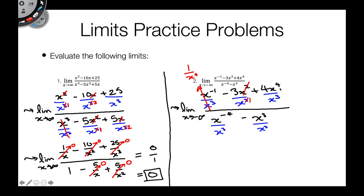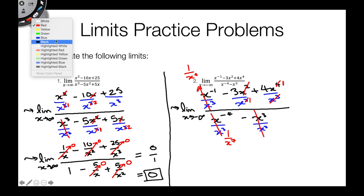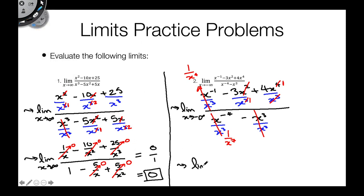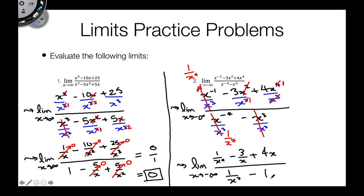x to the 4th: 3 of those cancel with x cubed, leaving x to the first in the numerator. x to the negative 4th is the same as 1 over x to the 4th, so this entire thing simplifies to 1 over x to the 7th — that x to the negative 4th just drops into the denominator. And the last pair cancels to 1. Rewriting: the limit as x goes to minus infinity of 1 over x to the 4th minus 3 over x plus 4x, all divided by 1 over x to the 7th minus 1.